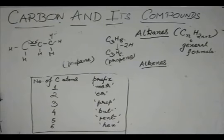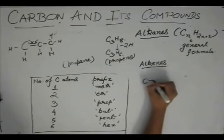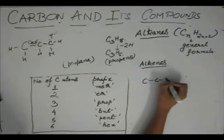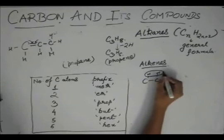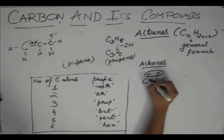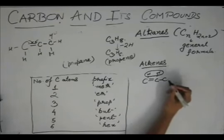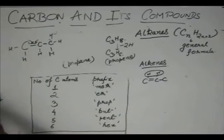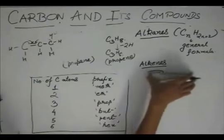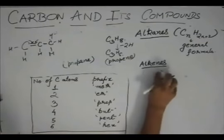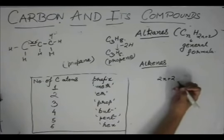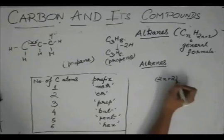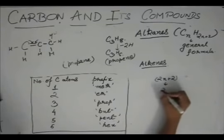Basically, what we are doing is that we are removing two hydrogens to make one double bond. If an alkane contains 2N plus 2 hydrogen, then removing two hydrogen will give us 2N hydrogens.